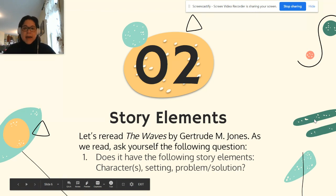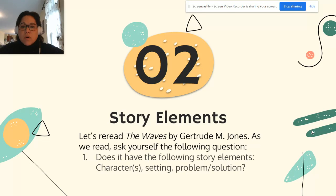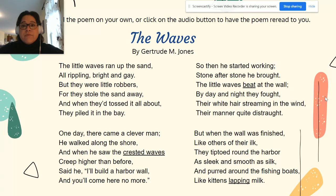One component of narrative poetry is the poem tells a story. This poem tells a fictional story about a man who builds a wall to stop the waves. Now let's look at the next component of narrative poetry: story elements. We're going to use the same poem. We're going to reread "The Waves" by Gertrude M. Jones, and this time I want you to think about: does it have characters, a setting, and a problem and solution?